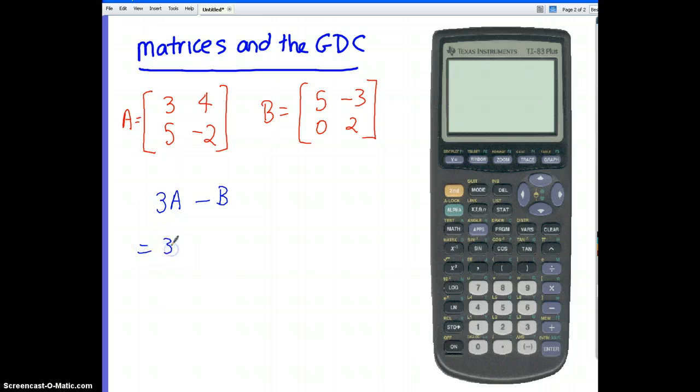That is 3 times [3, 4; 5, -2] minus [5, -3; 0, 2]. Of course we could do this by hand, and we might go and check this in a minute, but we'll just see how our graphing calculator can help us.